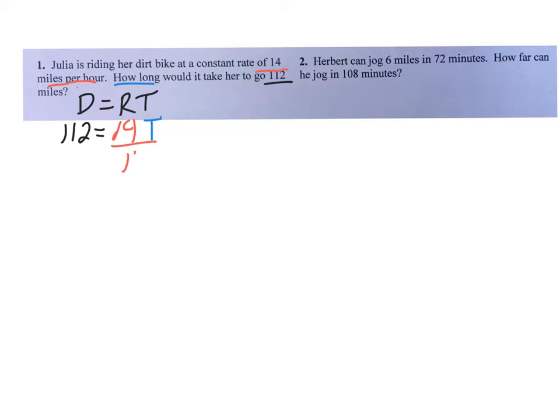So now you're just solving that one step equation. Divide off the 14, divide off the 14. Now if you need to, you go off to the side and do 112 divided by 14, but it just comes out to 8. So your final answer is T equals 8 hours. And yes, you have to have the hours on there.